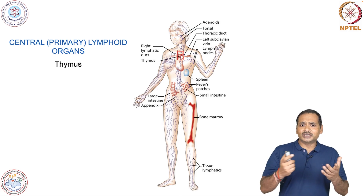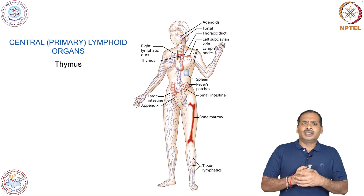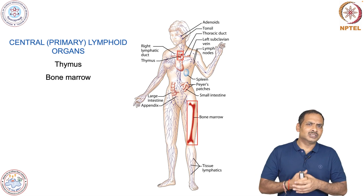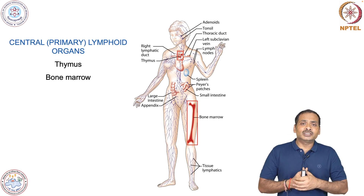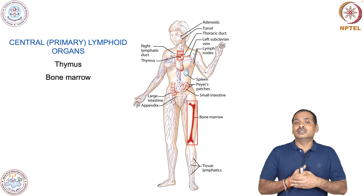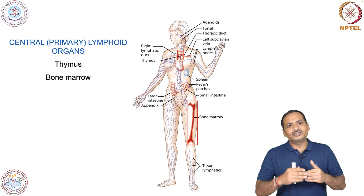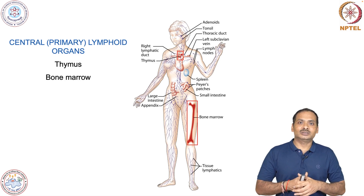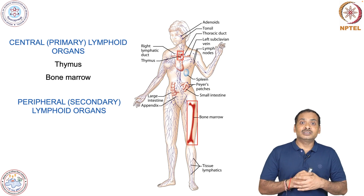The first primary lymphoid organ is the thymus, which is located close to the heart. The second is the bone marrow, which is present in all long bones. In these two organs there is generation of immune cells. After all the development processes, there will be generation of immunocompetent naive immune cells. This is all about the primary lymphoid organs.